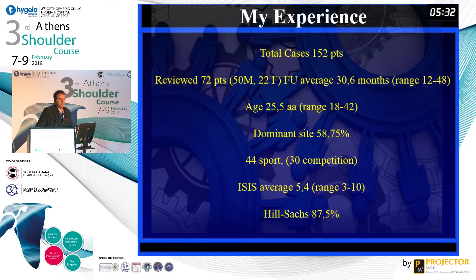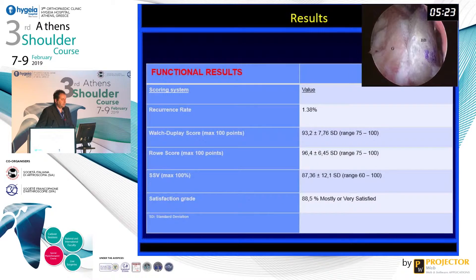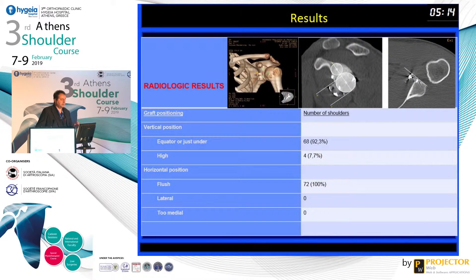With the new technique using buttons, I have performed 152 cases and followed 72 patients after my initial publication. There was one case of recurrent dislocation, so the recurrence rate is really low. Following my indications, we have excellent results, and the precision of the guide allows me to place the graft very precisely, exactly over the bone loss area.